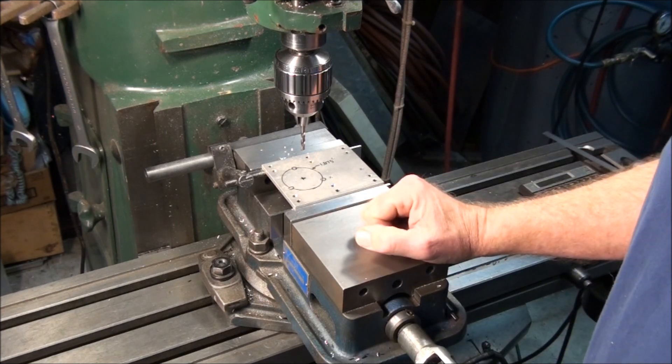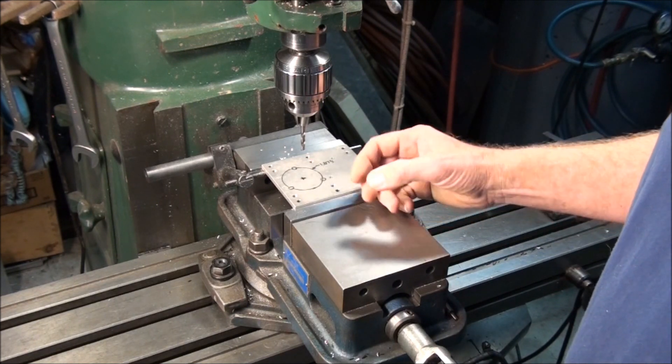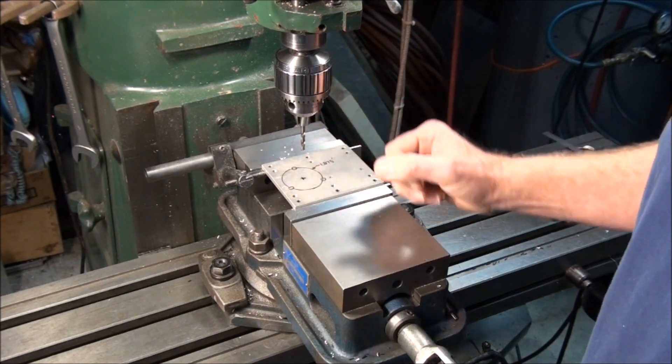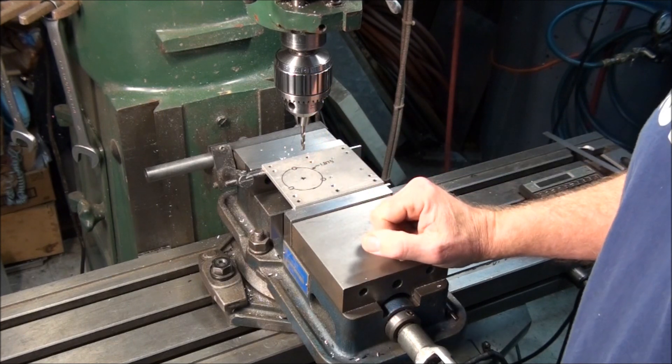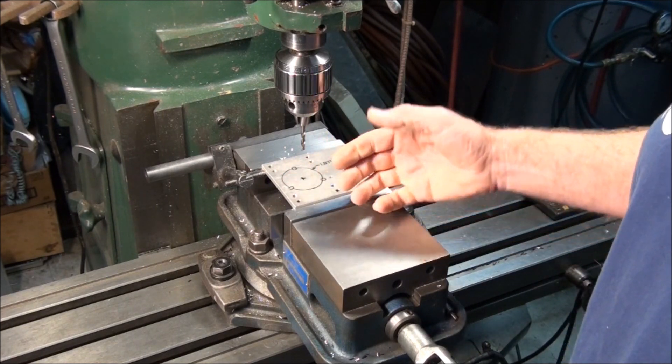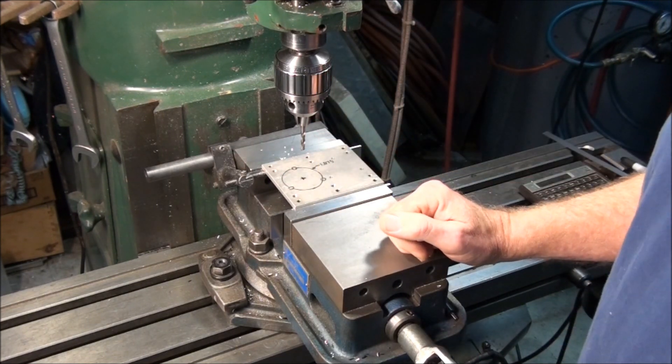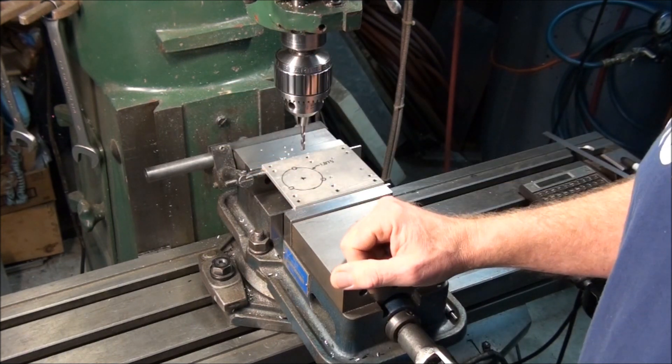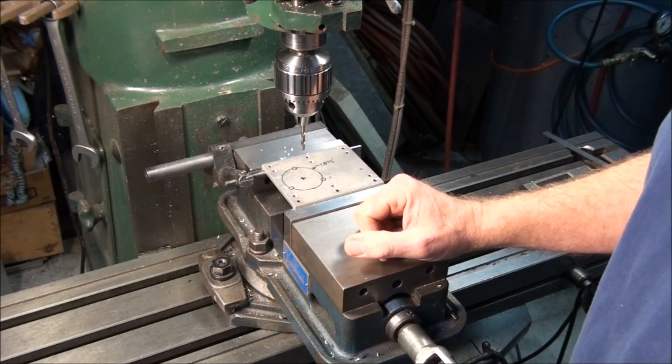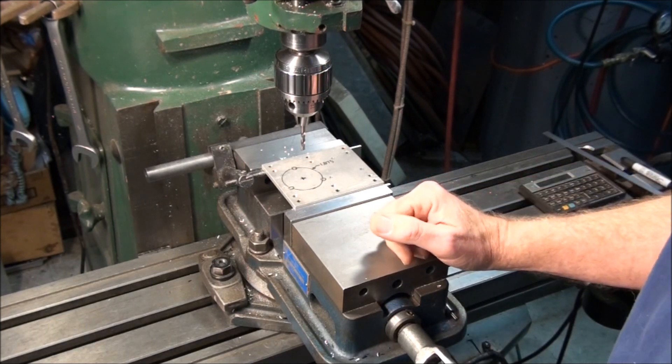Every now and then, we'll come across on a project a number of equally spaced holes on a specific diameter circle, or a bolt circle, or a pitch circle like this. If it's four holes, and those holes happen to be on axis, it's real easy. All you have to do is offset half the diameter of the circle.